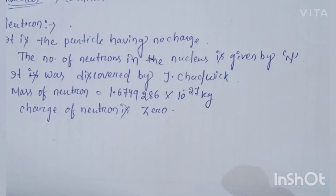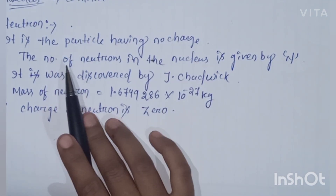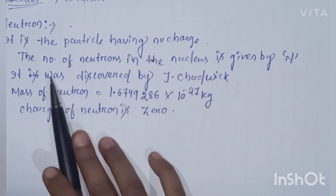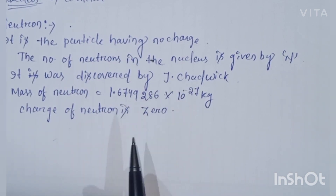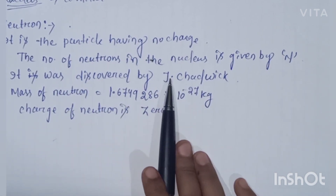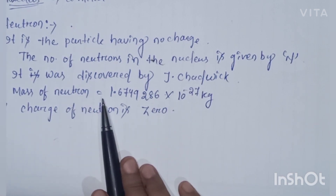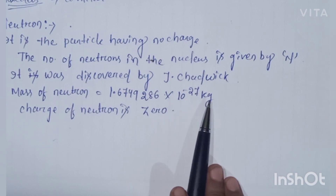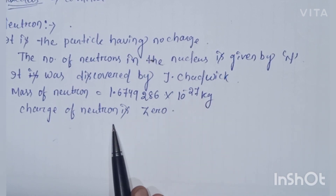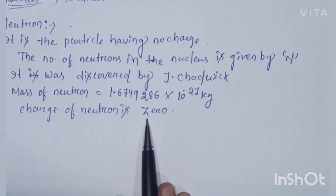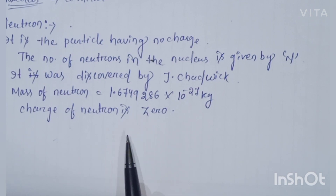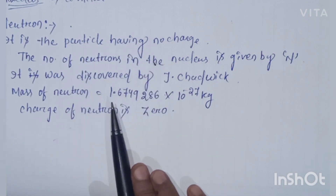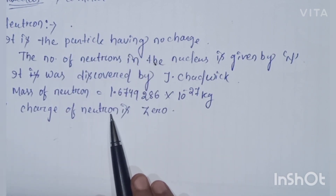The neutron is the particle having no charge. The number of neutrons in the nucleus is given by N. It was discovered by J. Chadwick. The mass of a neutron is 1.6749286 × 10⁻²⁷ kg. The mass of the neutron is slightly greater than the mass of the proton. The charge of a neutron is zero.